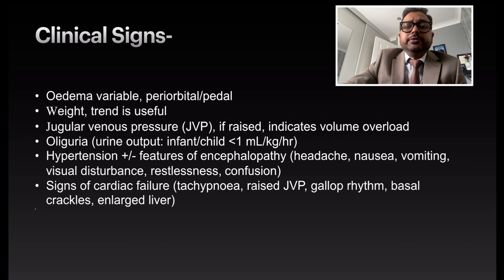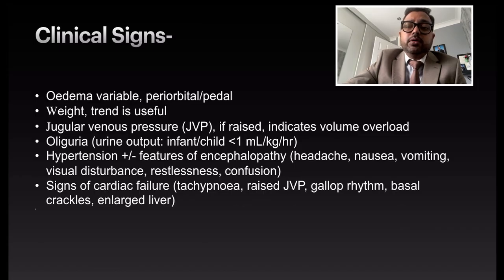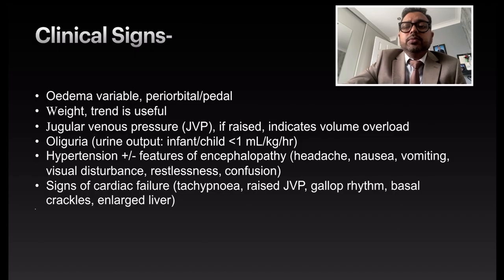For clinical signs, edema could be periorbital or pedal. Monitor weight trends and jugular venous pressure — if raised, consider volume overload. Oliguria is defined as less than 1 ml/kg/hour. Hypertension may be associated with features of encephalopathy such as headache, nausea, vomiting, visual disturbances, and confusion. Look for signs of cardiac failure: tachypnea, raised JVP, gallop rhythm, basal crackles, and enlarged liver.